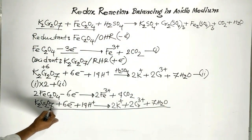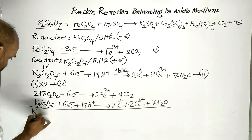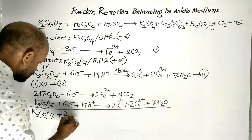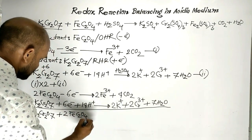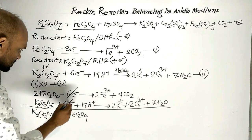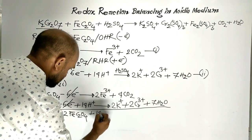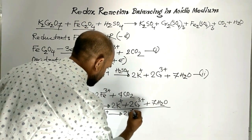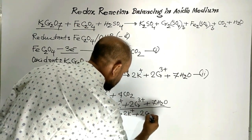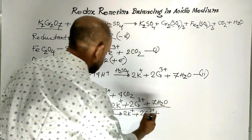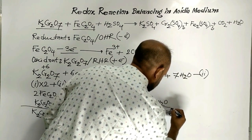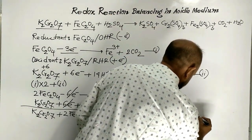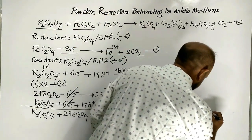Adding these two equations, the six electrons on each side cancel. On the left side: K2Cr2O7 + 2 FeC2O4 + 14H+. On the right side: 2K+ + 2Cr3+ + 2Fe3+ + 4CO2 + 7H2O.